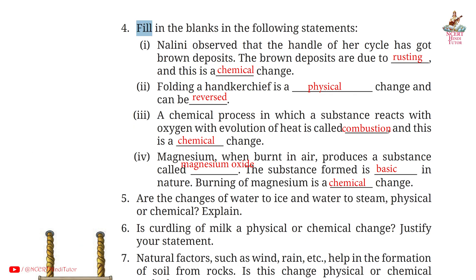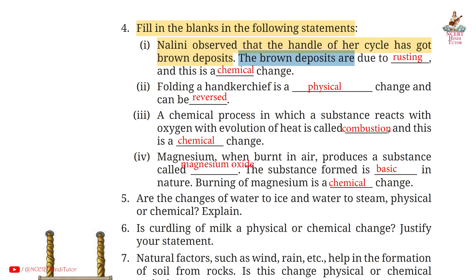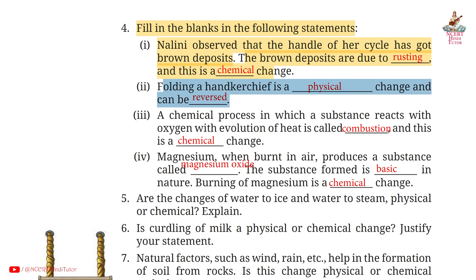Question 4: Fill in the blanks. 1st: Nalini observed that the handle of her cycle has got brown deposits. The brown deposits are due to rusting and this is a chemical change. 2nd: folding a handkerchief is a physical change and can be reversed.